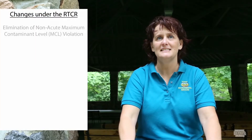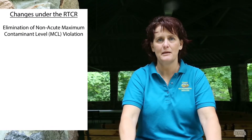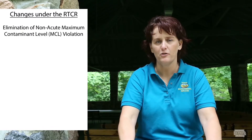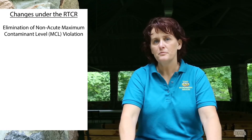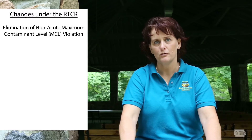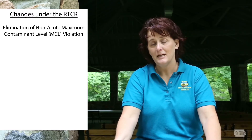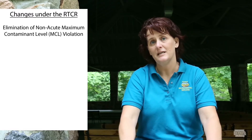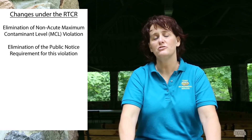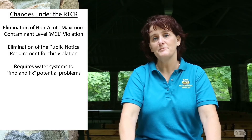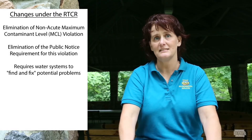As you probably guessed, the revised Total Coliform Rule has made a few changes to the original rule. One of the biggest changes under the RTCR is the elimination of the old non-acute maximum contaminant level violation — you might know it better as a non-acute MCL. This is the violation that was issued when multiple sample results showed the presence of total coliform bacteria. Since this rule eliminated the violation, it also eliminated the need to do public notice. Instead, the RTCR now has you look over your water system and attempt to find and correct any issues that might be causing the contamination.